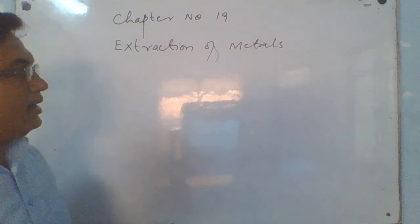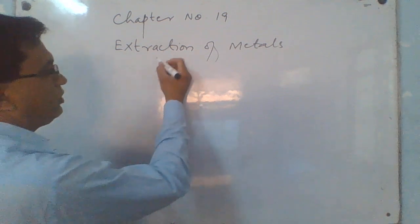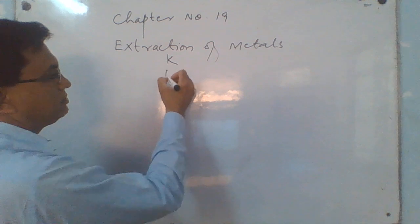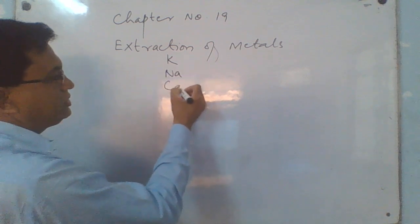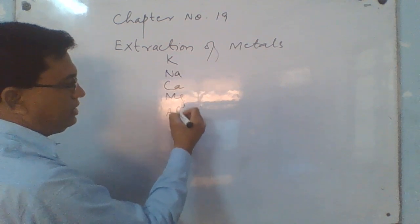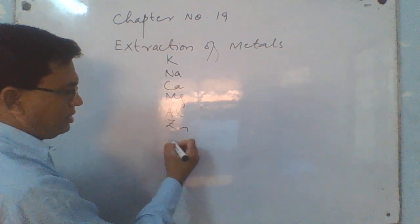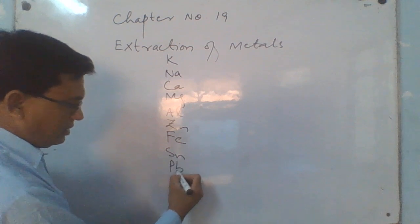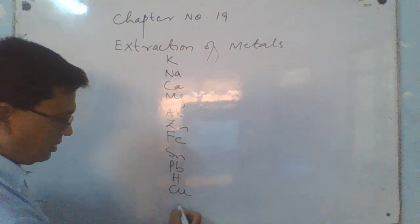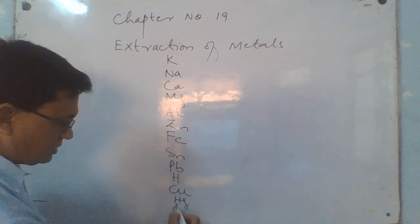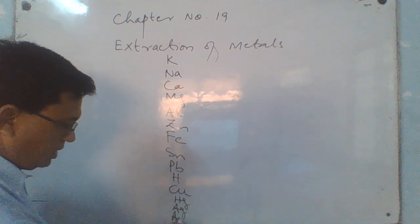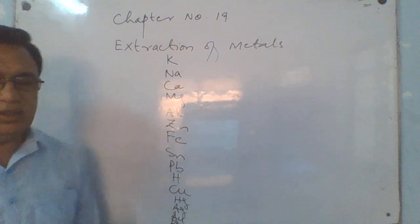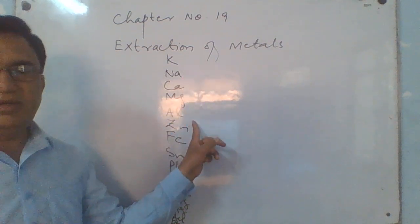You have already learned in the previous chapter the reactivity series: potassium, sodium, calcium, magnesium, zinc, iron, tin, lead, hydrogen, copper, mercury, silver, gold, and platinum. This is the reactivity series.